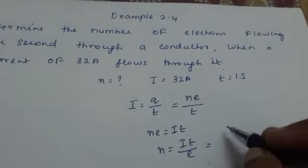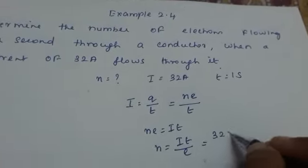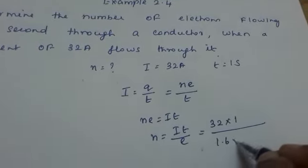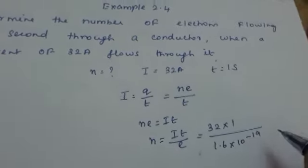Okay, so we can now go for substituting 32 into your time, which is 1 second, divided by 1.6 into 10 raised to minus 19.